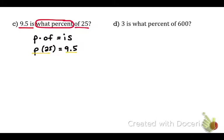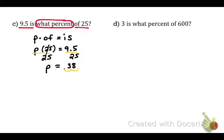What you do to one side you've got to do to the other — divide by 25 on both sides. The left side cancels out. The answer is 0.38. Going back to the original problem — 9.5 is what percent of 25 — move the decimal point two places to the right to get 38%. Always check that it has a percent sign if the problem asks for the percent.